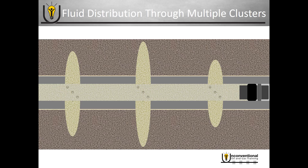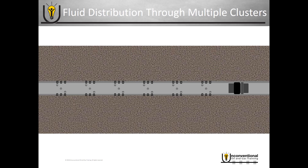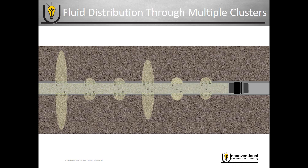Now if you look through investor reports, you'll see a lot of operators are going with more and more clusters per stage. In this example here, we have three. And the more clusters you add per stage, the more complicated it can be. So let's take six clusters for example. The more clusters you add, the more likely you are to have a frack job where one or two clusters take a large majority of the frack fluid, and the rest of the clusters get very little.